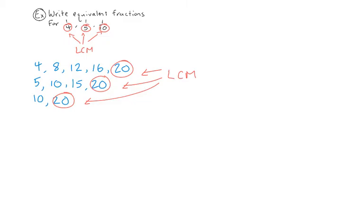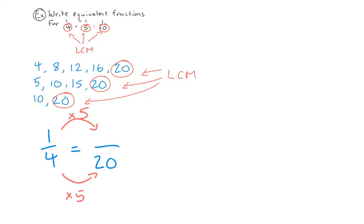We want to write equivalent fractions for 1 over 4, 1 over 5, and 1 over 10. Let's first look at 1 over 4. The new denominator is going to be the lowest common multiple, which is 20. How do I go from 4 to 20? 4 times 5 gives you 20, so multiply the numerator by 5 as well: 1 times 5 is 5. So 1 over 4 is equal to 5 over 20 — these are equivalent fractions, even though they do not look like one another.